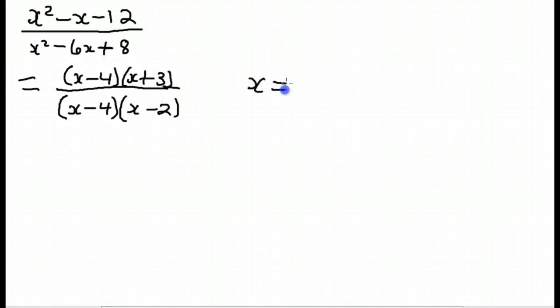So our first step is to factor all the expressions completely, top and bottom. Next, let's state the non-permissible values. x cannot be 2 or 4. Putting a 2 or a 4 in would cause this bottom expression to evaluate to 0. We can't divide by 0. Next, let's cancel the common factors and simplify. And here is our simplified expression of x plus 3 over x minus 2 with non-permissible values of 2 and 4.